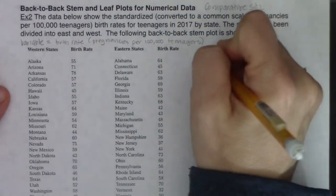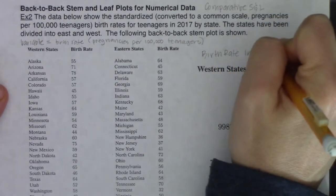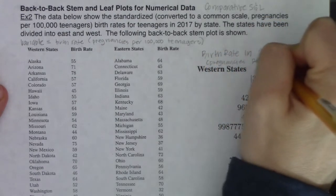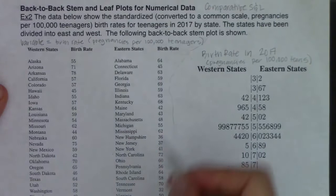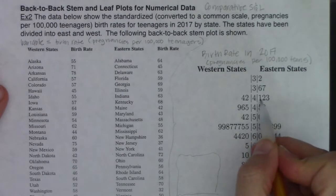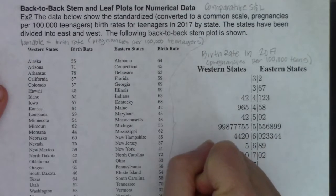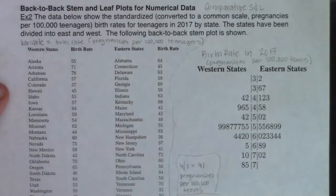So let's fix those things. The title should be 'Birth Rate in 2017' with units of pregnancies per 100,000 teens. I've got my variable there. The other thing I want to do is set up a key. I'll pick 4|1 — so 4-1 equals 41 pregnancies per 100,000 teens. Now I've got a more complete graph.